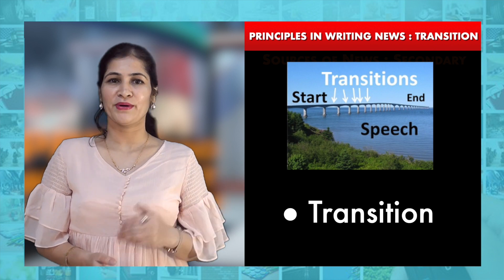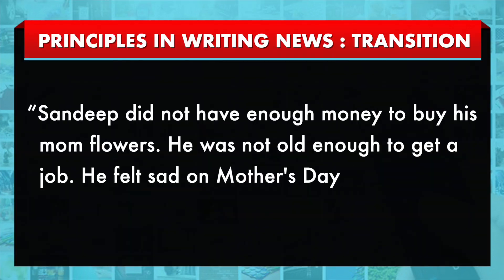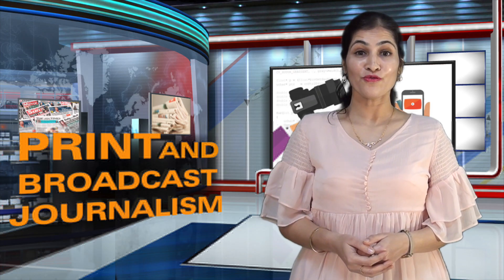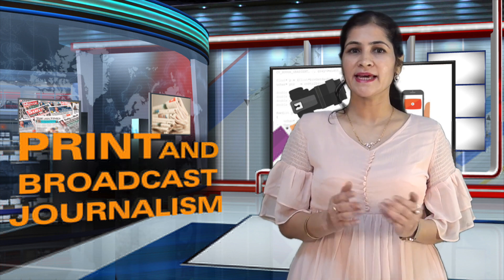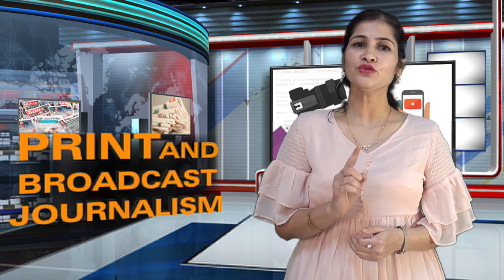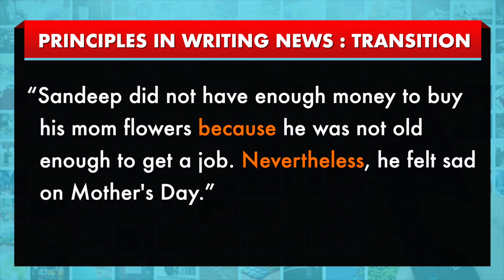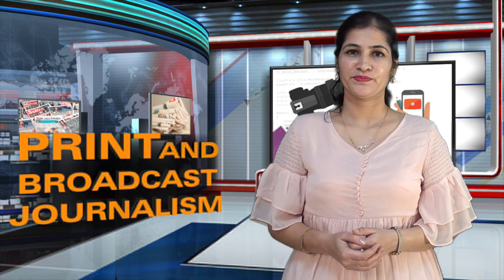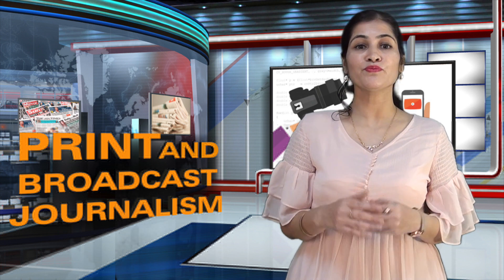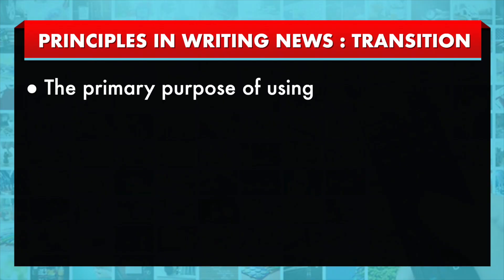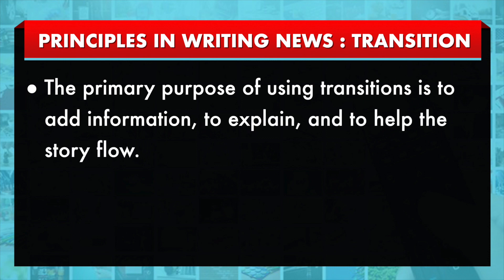The fourth principle is transition. Consider this example: 'Sandeep did not have enough money to buy his mom flowers. He was not old enough to get a job. He felt sad on Mother's Day.' You might observe a lack of flow — the sentences seem choppy, with gaps that may confuse readers. There is a need to use words that smooth out those gaps. Like this: 'Sandeep did not have enough money to buy his mom flowers because he was not old enough to get a job. Nevertheless, he felt sad on Mother's Day.' Words and phrases which provide a connection between ideas, sentences, and paragraphs are called transitions.